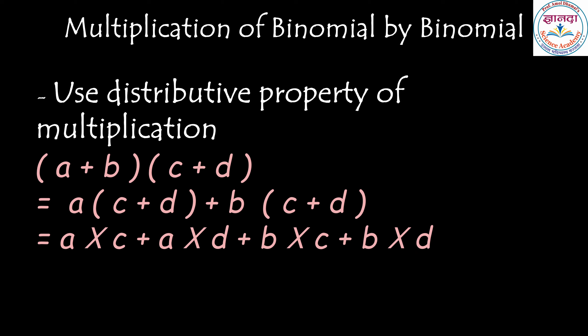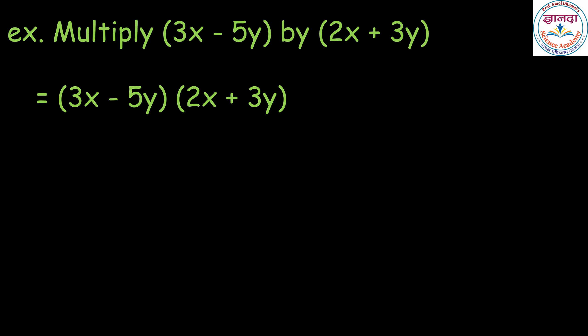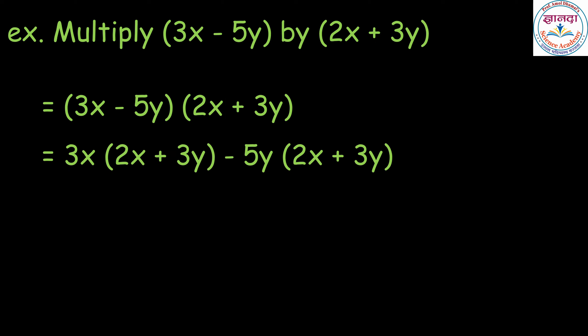Let us discuss this multiplication with an example. Multiply 3x minus 5y by 2x plus 3y. Now we apply the distributive property of multiplication. We get 3x into bracket 2x plus 3y, minus 5y into bracket 2x plus 3y.